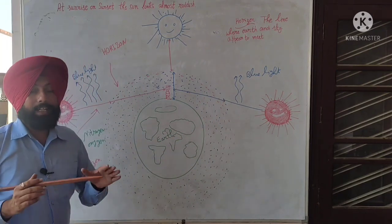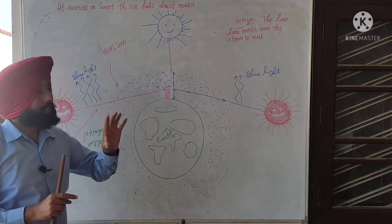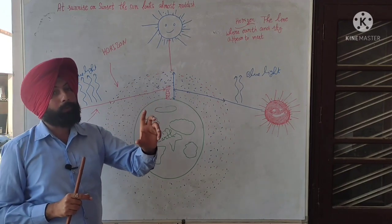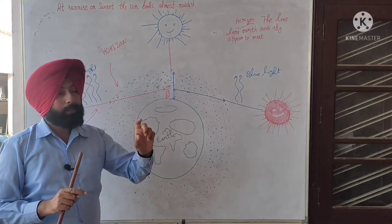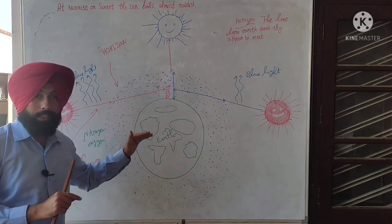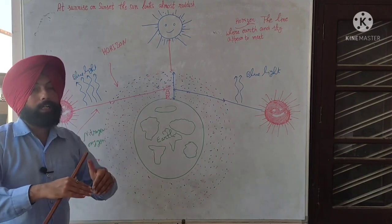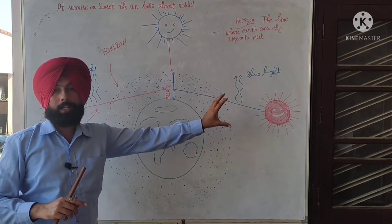For observer Tippu at sunrise or sunset, red light is visible but not pure red. Some orange and yellow are also visible because those wavelengths scatter less, so maximum color visible is almost red.